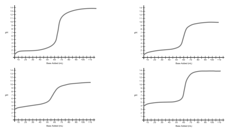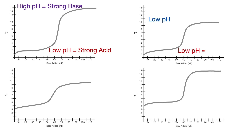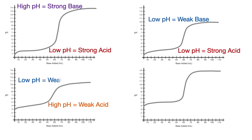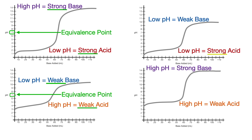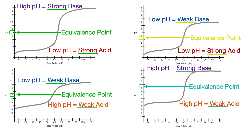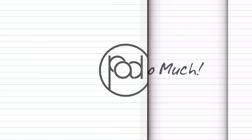So here are the four general types of acid titration curves again. Low pH start and high pH end indicates strong acid and strong base. Low pH start and low pH end indicates strong acid and weak base. High pH start and low pH end indicates weak acid and weak base. High pH start and high pH end indicates weak acid and strong base. Strong-strong and weak-weak acid titration curves both have equivalence points at pH of 7. Strong acid-weak base has an equivalence point below pH of 7 in the acidic range. Weak acid-strong base has an equivalence point above pH of 7 in the basic range.